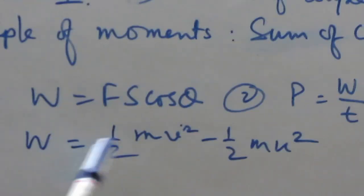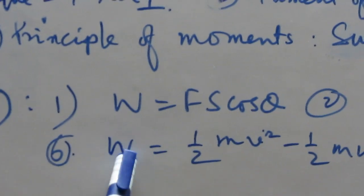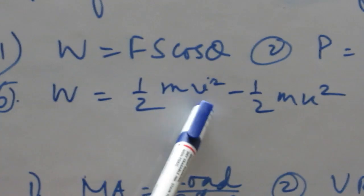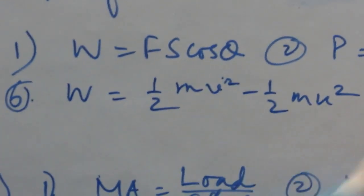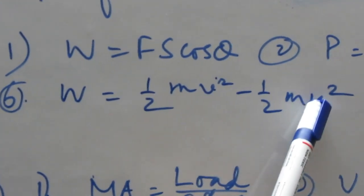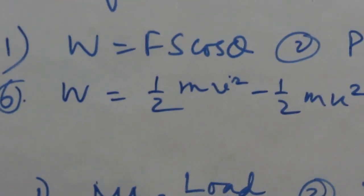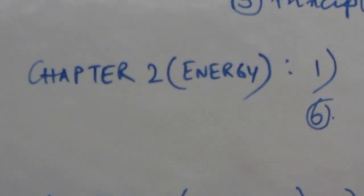Work-energy theorem: work done by force is equal to change in kinetic energy. Final kinetic energy half mv square minus initial kinetic energy, m into initial velocity square. So chapter 2.